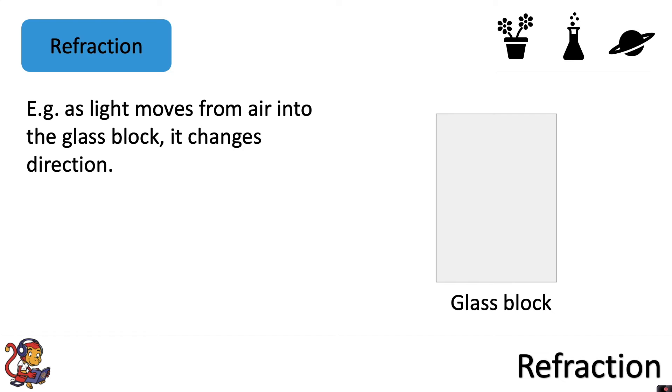So for example, as light moves from air into the glass block, it changes direction. So there's your incident ray going in, rather than going straight through, because it's entering a different medium, it will change direction.